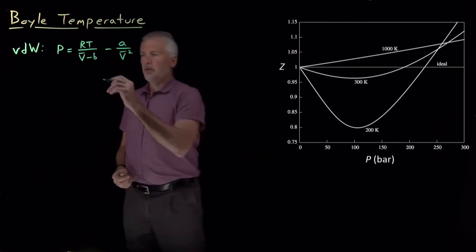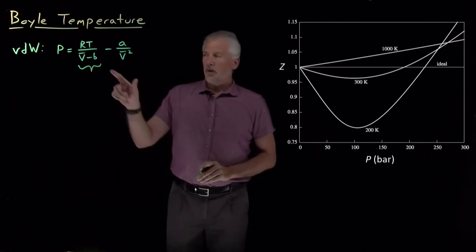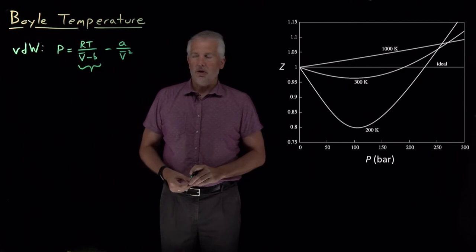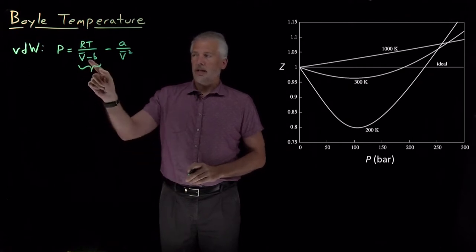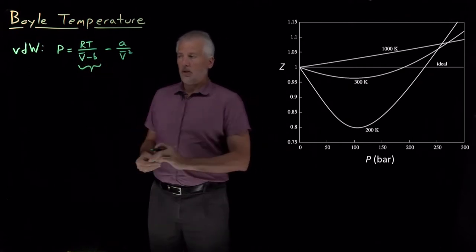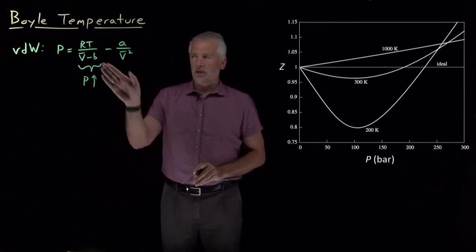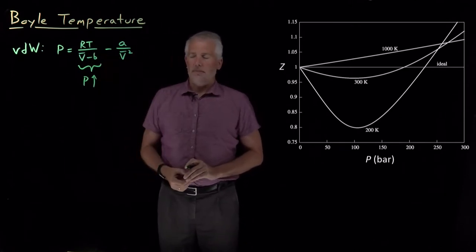And just as a quick reminder, when the molecules have some finite volume that's subtracted from the volume that the gas is occupying, that reduces this denominator, which causes the pressure of the gas to increase compared to if we just had an ideal gas.